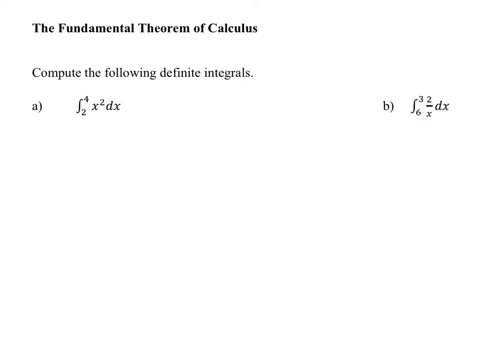In this video we're going to take a look at some examples that show us how to use the second part of the fundamental theorem of calculus. This part of the theorem is what actually allows us to evaluate definite integrals and find exact answers. If we're trying to integrate from a to b some continuous function f of x, we compute the antiderivative, capital F, and evaluate F(b) minus F(a). To compute definite integrals, we have to be able to find antiderivatives.